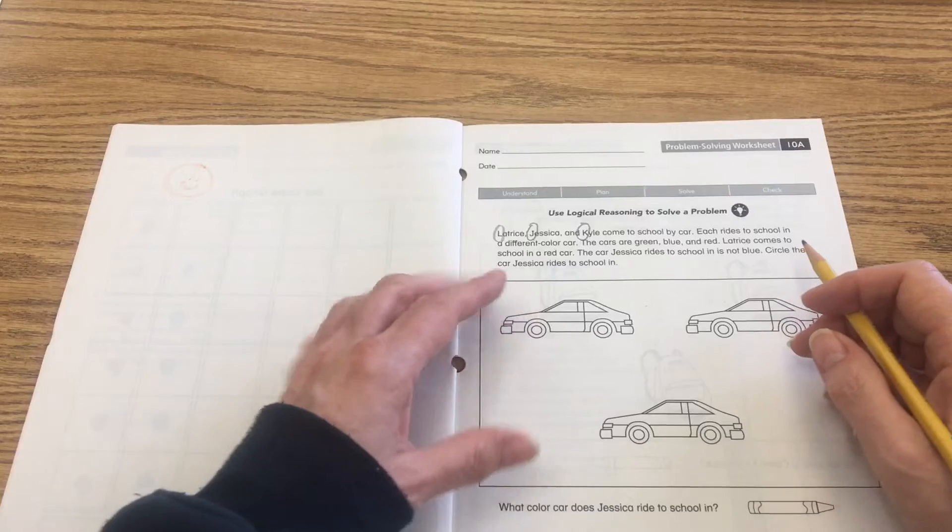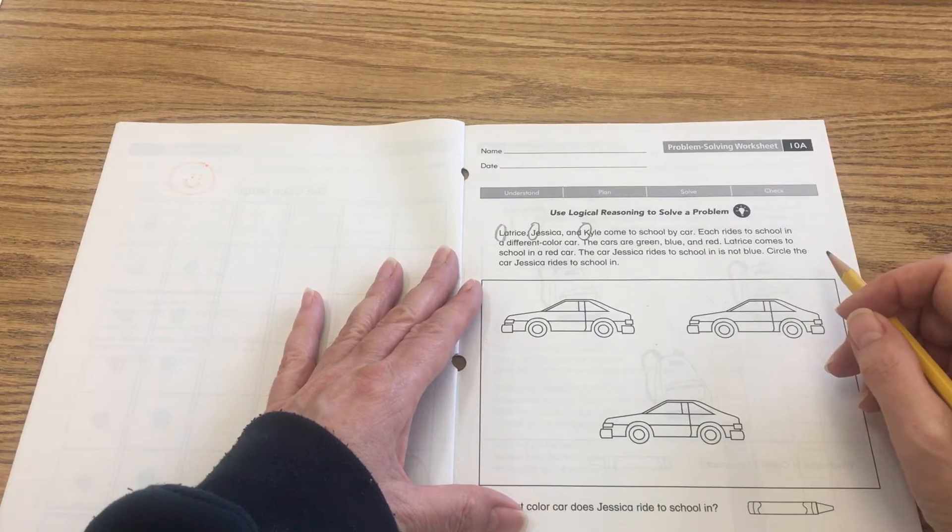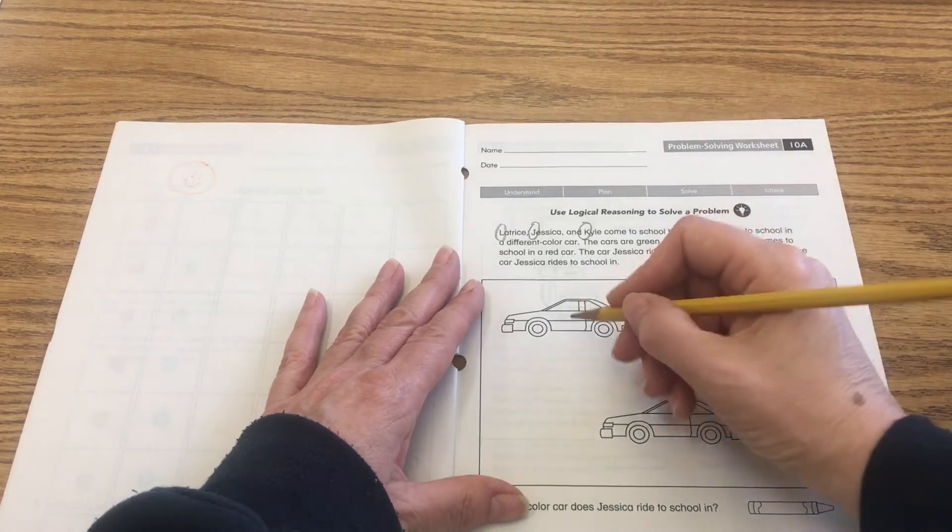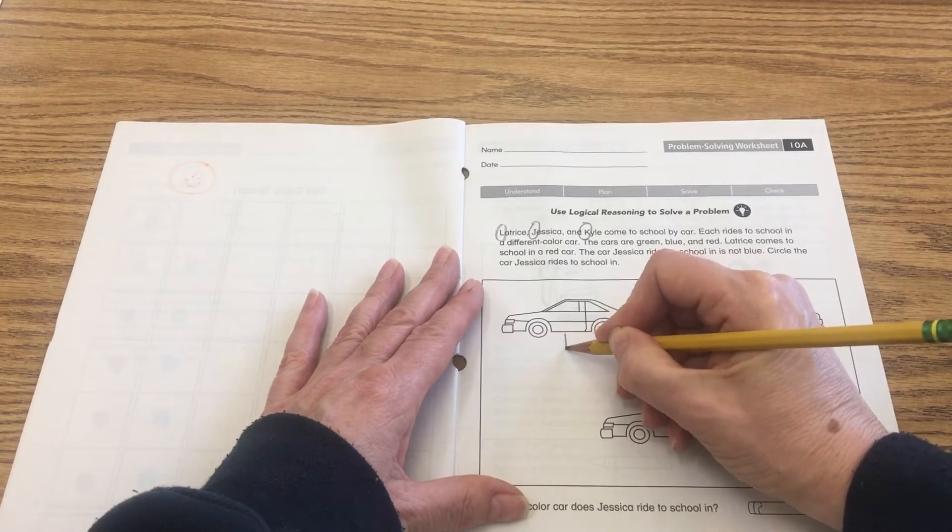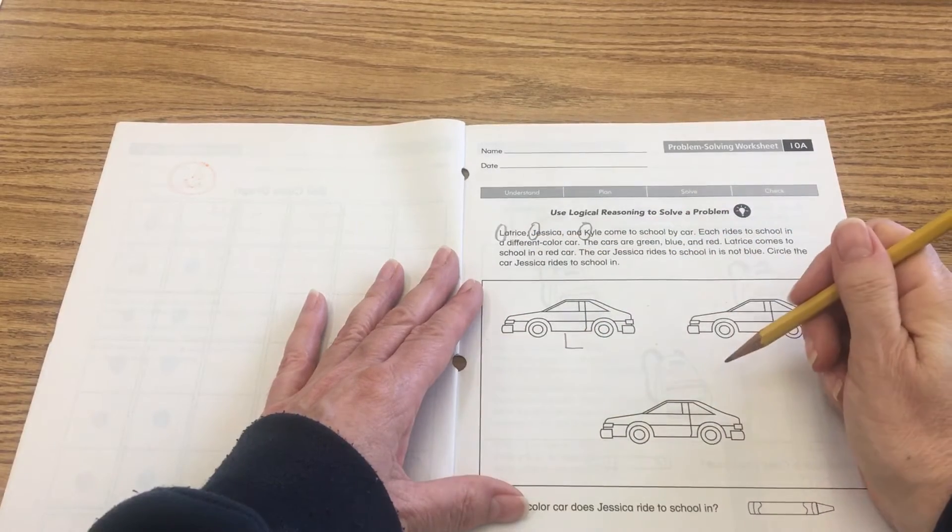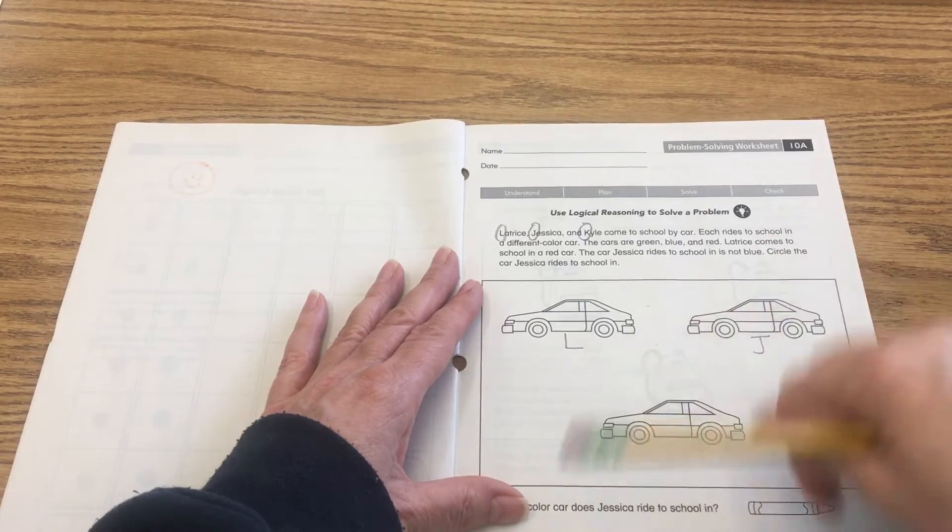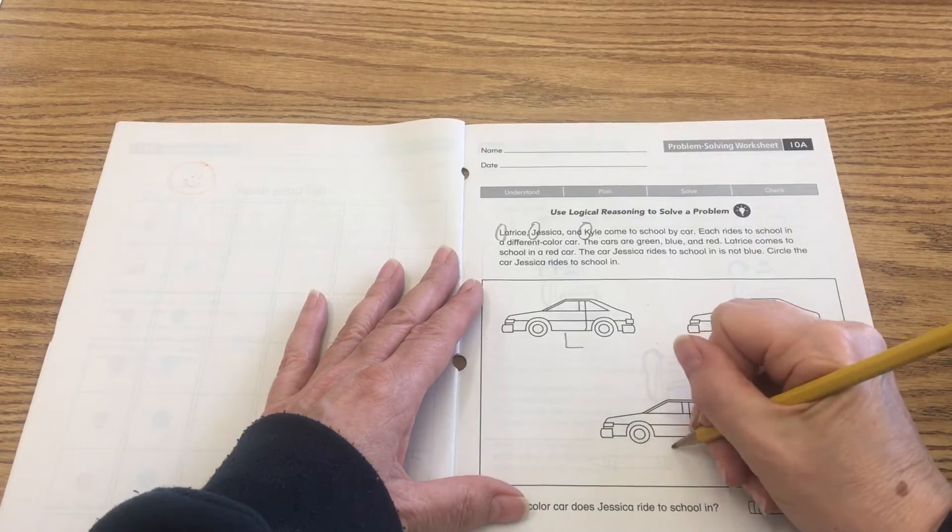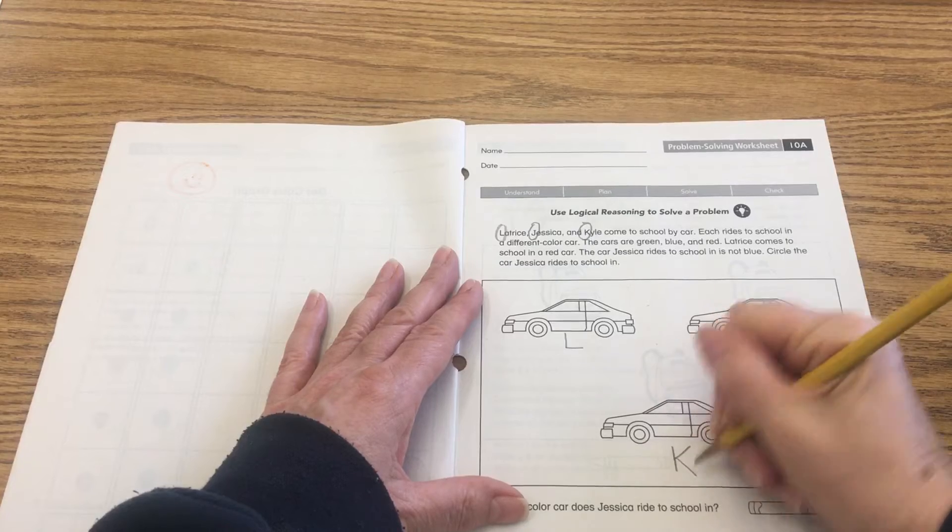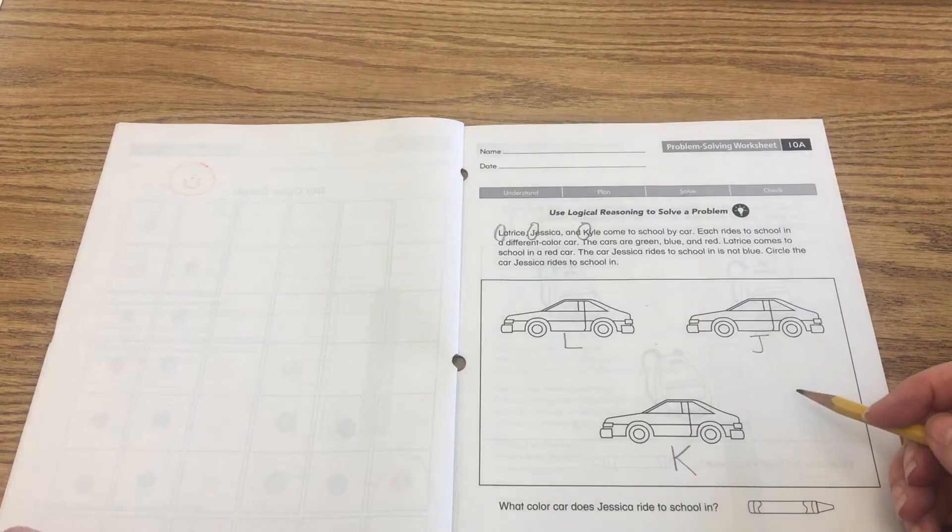Latrice, Jessica, and Kyle come to school by car. So on this one, right under this car, I'm gonna put an L. That's for Latrice. I'm gonna write a J under this one, that's for Jessica, and I'm gonna put a K under this one, that's for Kyle. So go ahead and do that. I'm gonna wait and give you time.